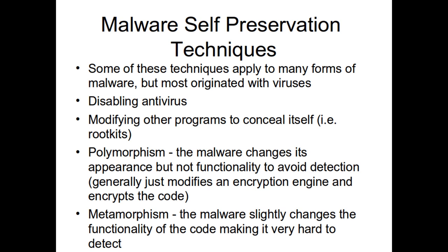Polymorphism is where the malware changes the appearance of its code by writing equivalent assembly commands. It produces the same output and does the same thing, but changes the assembly command so it no longer shows up by exact string detection. This does not actually modify functionality. A lot of viruses have an encryption engine to encrypt most of the virus so it's harder to spot. Polymorphism usually changes the encryption engine to look different, sometimes also changing the key.